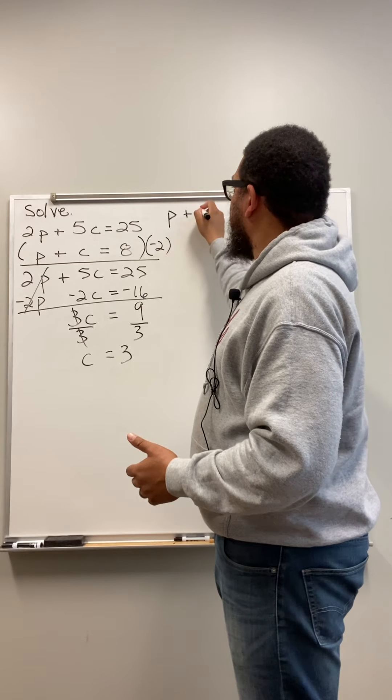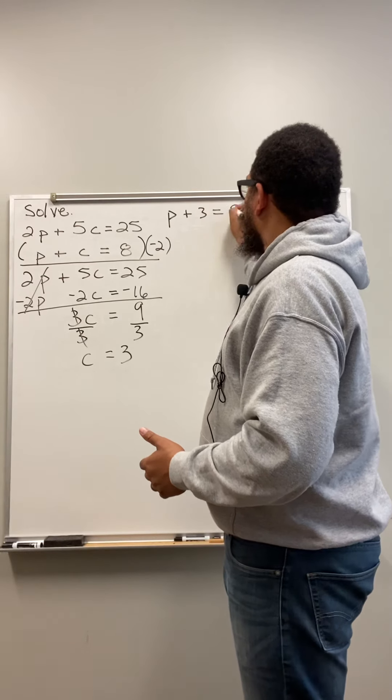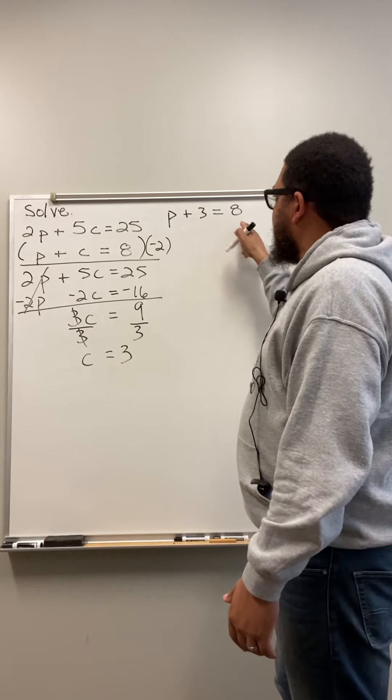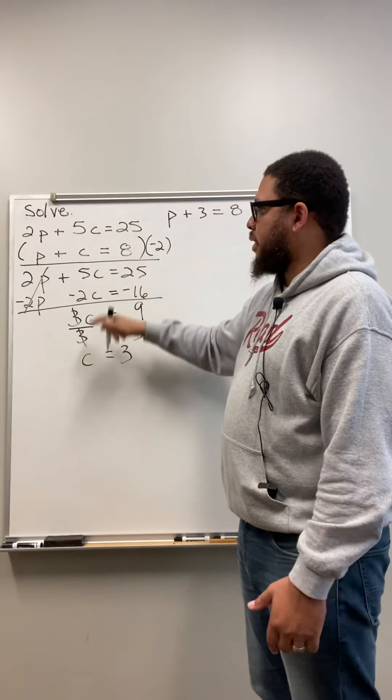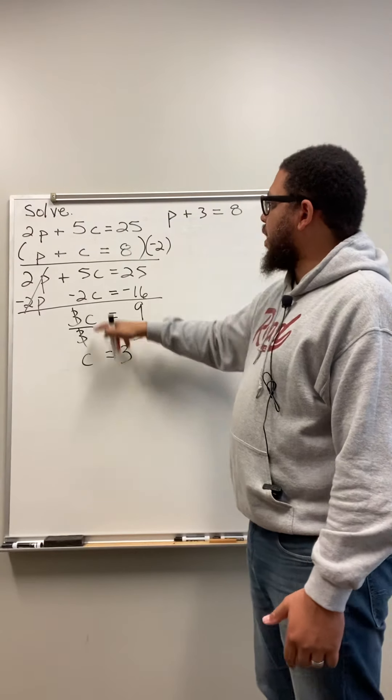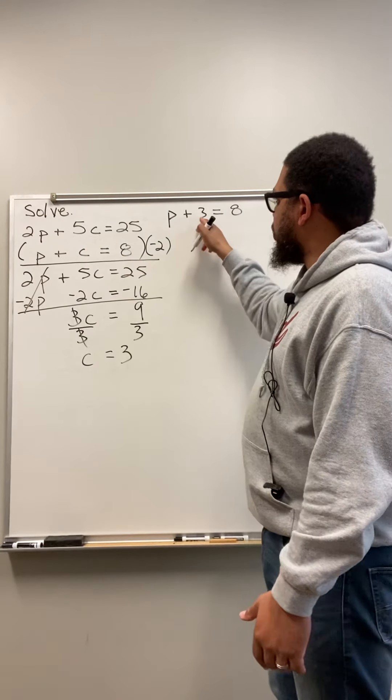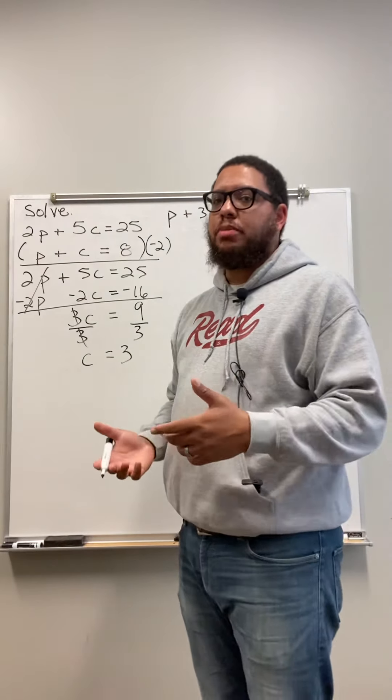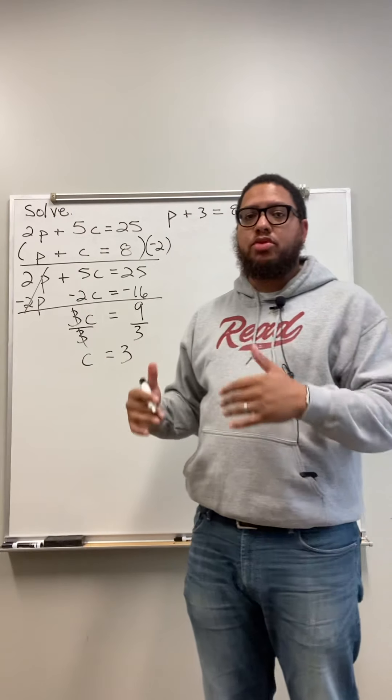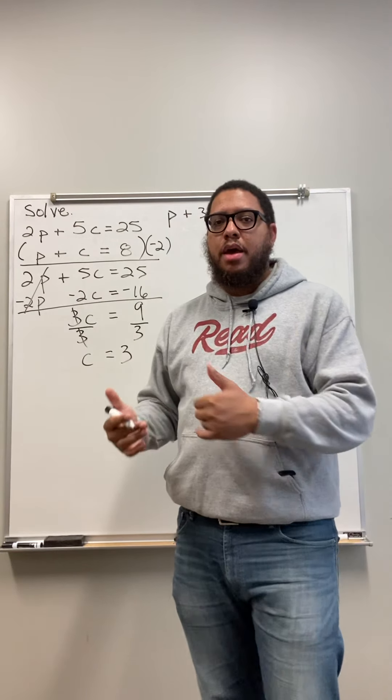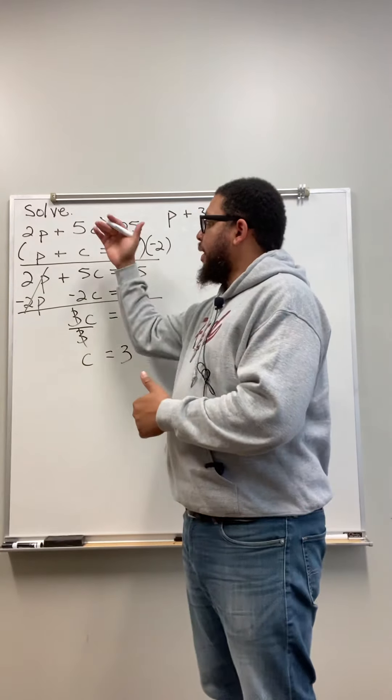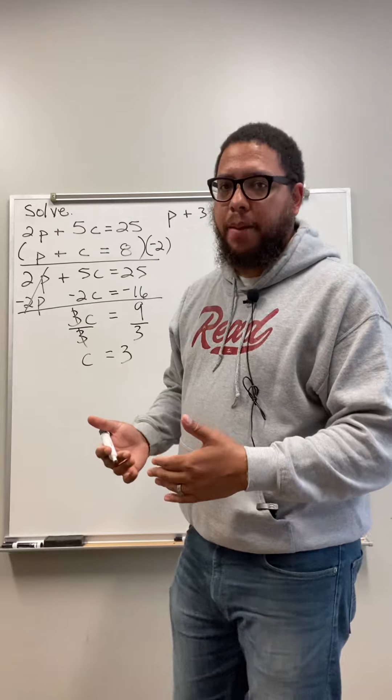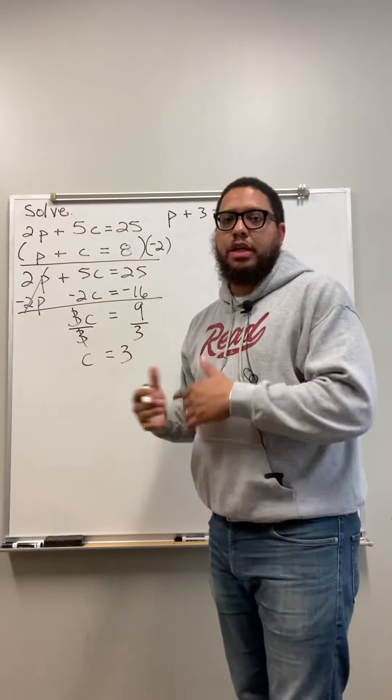So I do P plus 3 equals 8. Now this says P plus C equals 8. But why does this say P plus 3 equals 8? It says that because now I know what C is. C equals 3. So now instead of writing C, I just put a 3 right there. I can replace. Now I'm kind of using the substitution method. Even though there's a whole other method of solving systems referred to as the substitution method. But even in the elimination method, we still have to substitute at some point. We'll do the substitution method in another video.